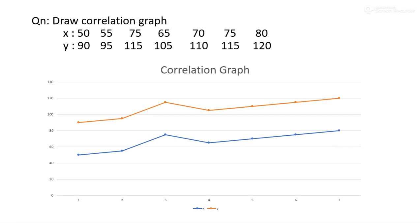Then, plot the values of the y variable and connect the points to get the curve. The pink colored curve denotes the variable y. When we examine the direction of the curves of x and y, we see both are moving in the same direction. Therefore, x and y are positively related — there is perfect positive correlation between x and y.